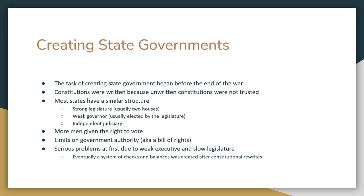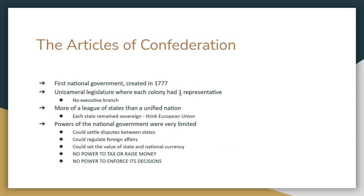Even though the executive was made stronger and stronger, in reality most of the powers still rested in the state legislatures. So that was the state governments. What about the big government — the federal government? That's going to be found in the Articles of Confederation. This is the first national government, drafted by the Second Continental Congress in 1777. It created a national government that consisted of one house — that meant it was a unicameral legislature — and each colony had one representative, so there were 13 representatives total.